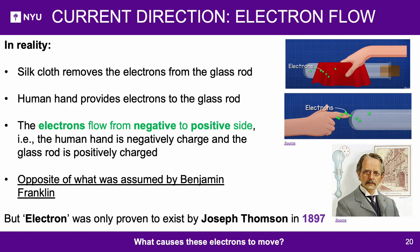Current direction — Electron flow: In reality, the silk cloth removes electrons from the glass rod and the human hand provides electrons to the glass rod. Therefore, electrons flow from the person to the glass tube — the human hand is negatively charged and the glass rod is positive, opposite of what Benjamin Franklin assumed. This negatively charged subatomic particle, the electron, was only proven to exist by Joseph Thompson in 1897. Presumably, as a tribute to Benjamin Franklin and to avoid confusion with already-manufactured batteries, the conventional current direction is still followed today.